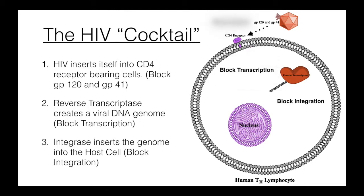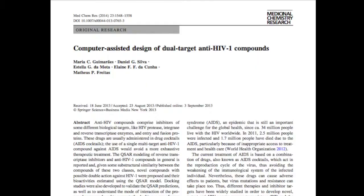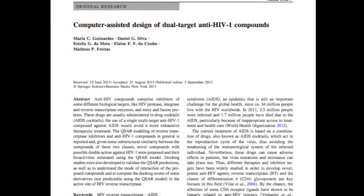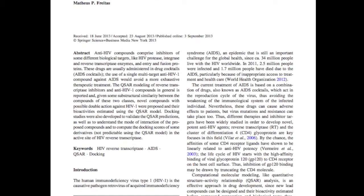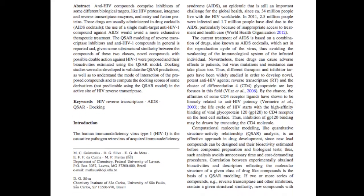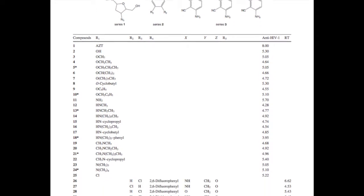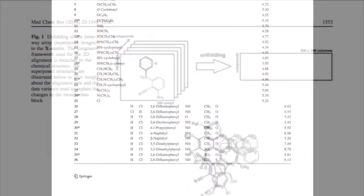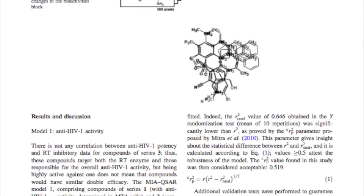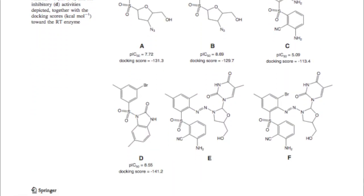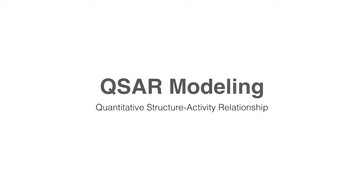However, there is still a need to develop new drugs and cheaper methods of producing them. One group, led by Maria Guimarench, attempted to use computer modeling to reduce the time and cost of drug production by identifying promising options and eliminating dead-ends virtually. They went a step further in trying to identify dual-target drugs, potentially doubling the antiviral efficacy. They used quantitative structure-activity relationship modeling, or QSAR modeling, which uses the structure of a molecule to predict its biological activity.